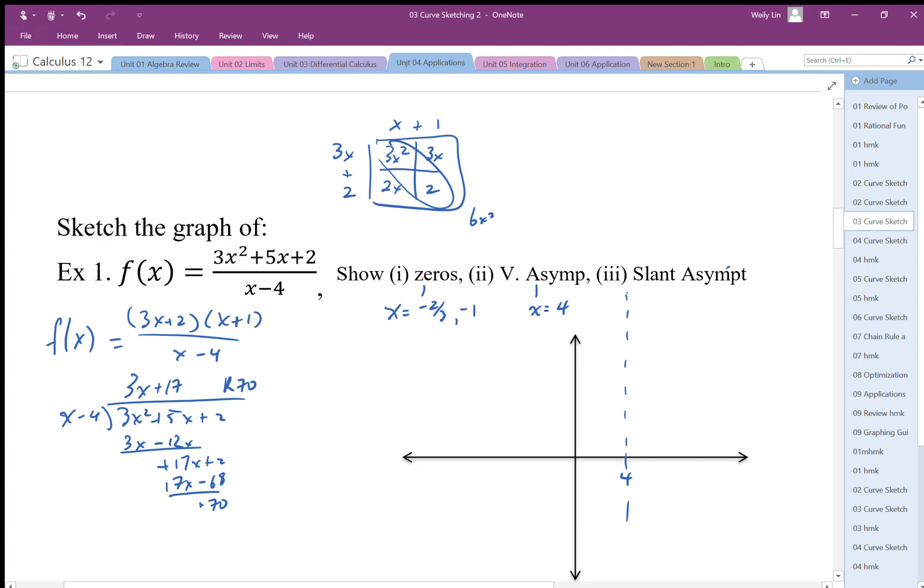I'm going to have to scale my axes here. So I've got a slant asymptote with slope of 3, y-intercept somewhere around 17. I'm just kind of eyeballing it. There's my y-intercept of the asymptote.